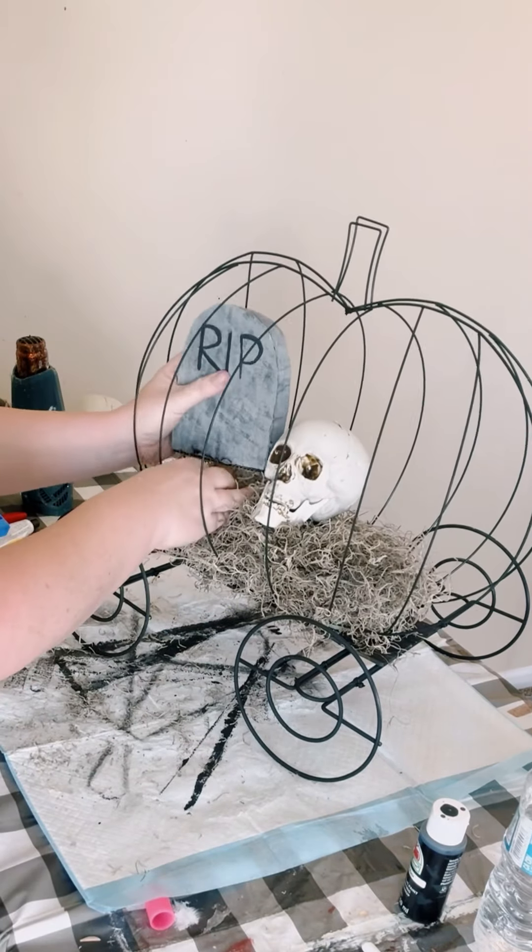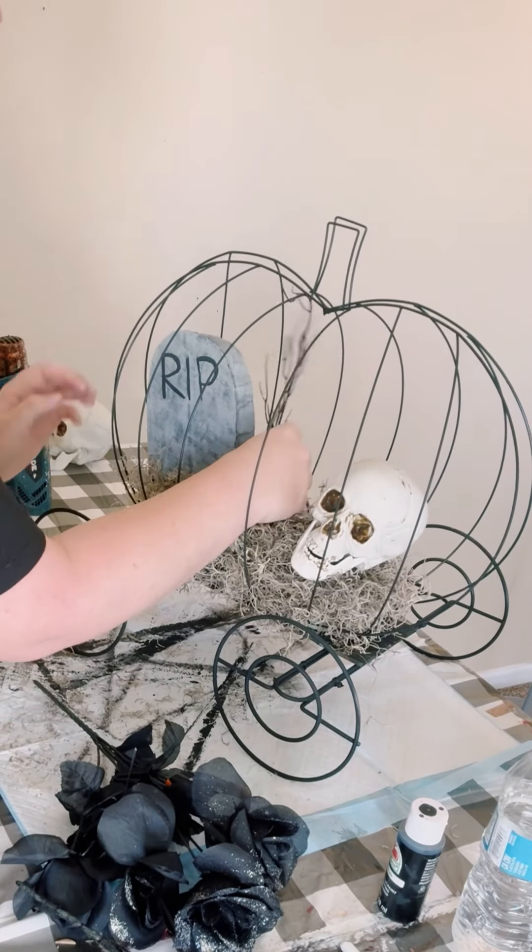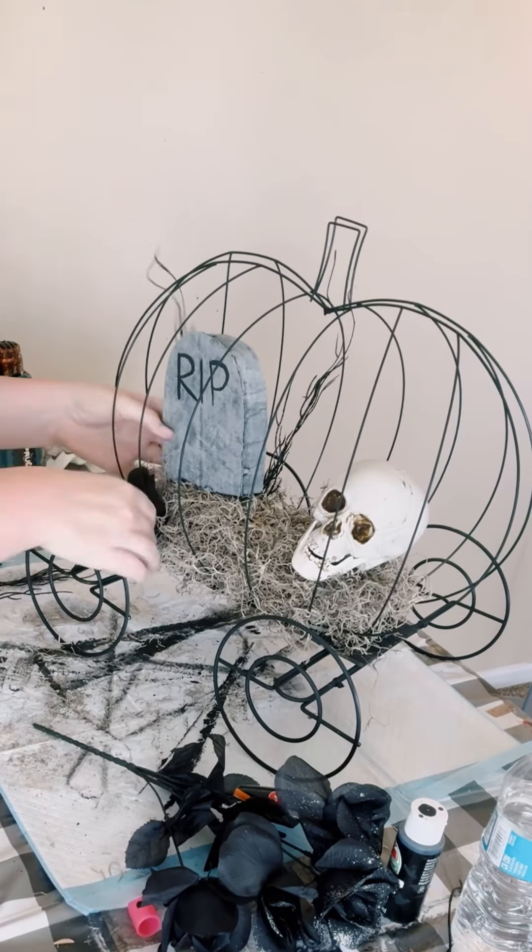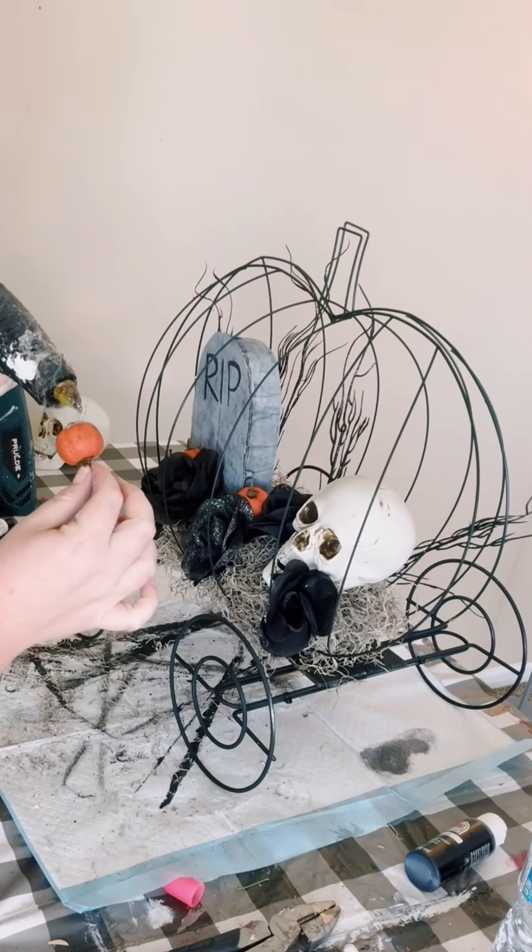I added that, added some black branches and black roses that I picked up from Dollar Tree, and then added some foam pumpkins that I also got from Dollar Tree. And if you're not into spooky season, that is okay. You could still build this but make it a fall theme, make it your own.